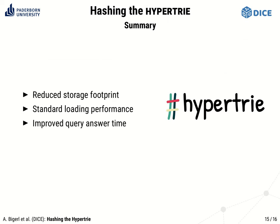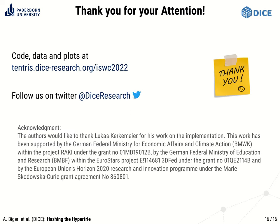To sum up, we reduced redundancies and overheads in the tensor data structure HyperTrie. Using the optimized HyperTrie in the triple store Tentris led to a reduction of the memory footprint by up to 70%, while loading times stayed within the typical range of other systems. The optimizations also led to an improvement in query answering times. Thank you very much for your attention. You can find all code, data, and plots to reproduce our paper at the link provided here, and we would be pleased to discuss with you on Twitter.